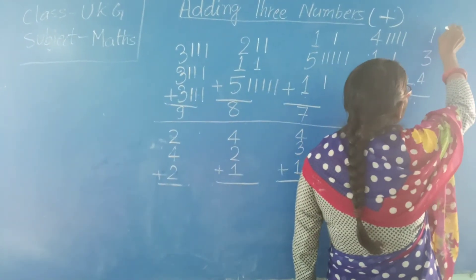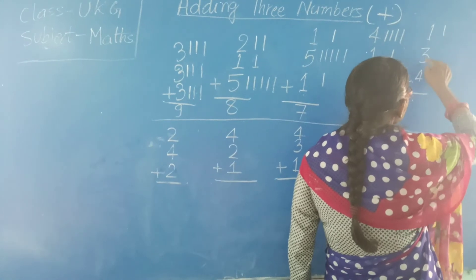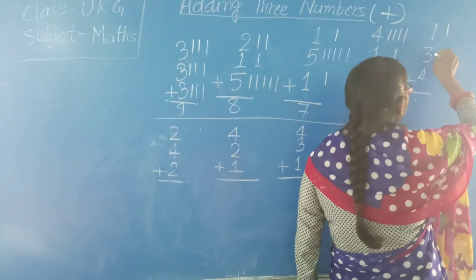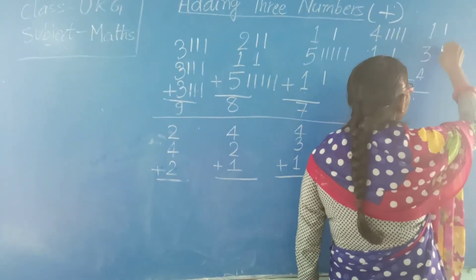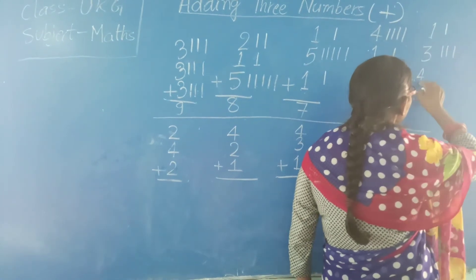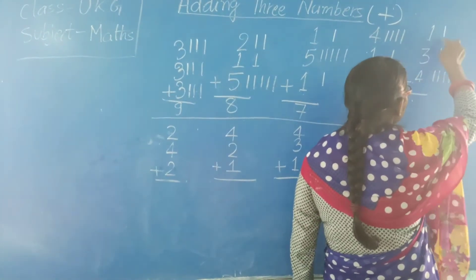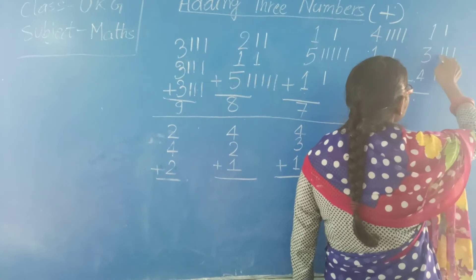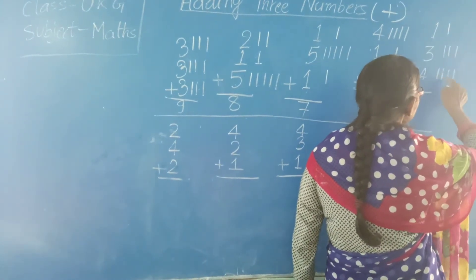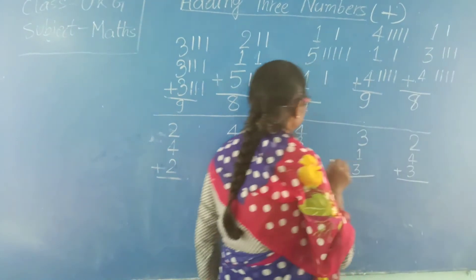Now: 1, 3, 4. So we draw 1 line, then 3 lines: 1, 2, 3, and 4 lines: 1, 2, 3, 4. Now count: 1, 2, 3, 4, 5, 6, 7, 8. The answer is 8.